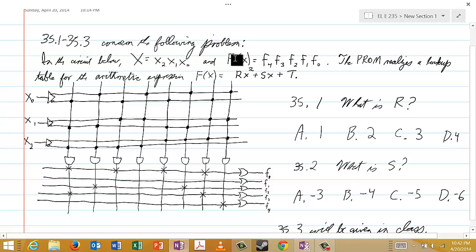And then the function is f and its value, it's a 5-bit number, and its bits are f4, f3, f2, f1, f0 in that order. The PROM realizes a lookup table for the arithmetic expression f of x,